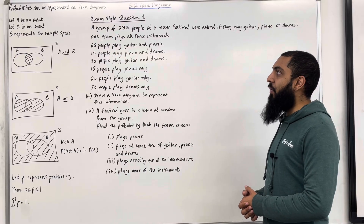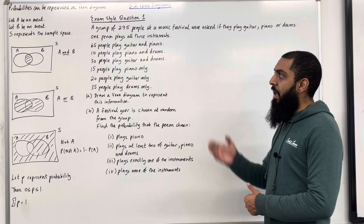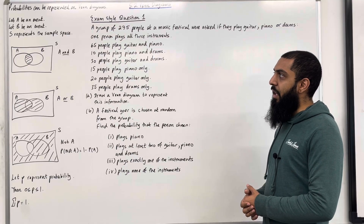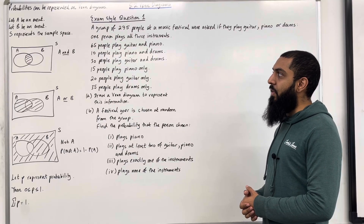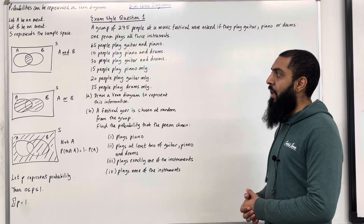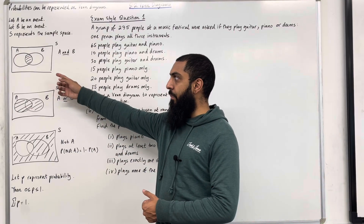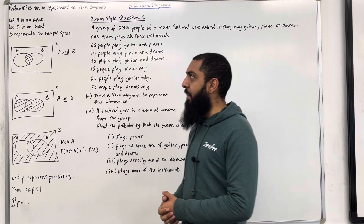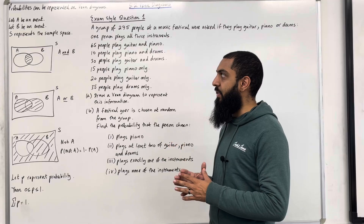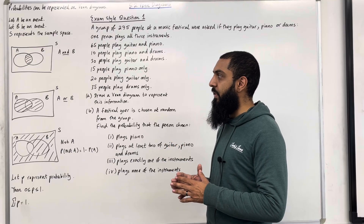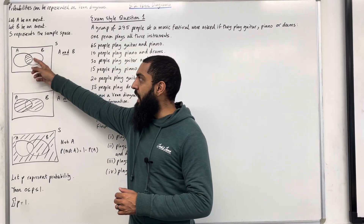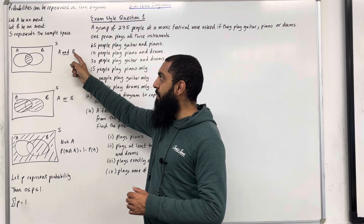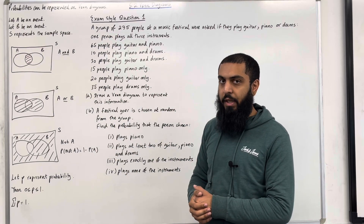Probabilities can be represented on Venn Diagrams. Let A be an event and let B be an event. S represents the sample space. Consider the following Venn Diagram — we've got the two events A and B and the rectangle which represents the sample space. This shaded region represents the event A and B, or A intersect B.